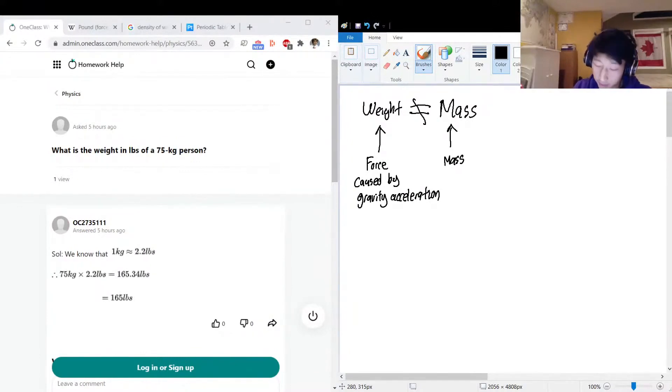Okay, so if we have a mass of 75 kilograms, so our m value is 75 kilograms, and we're here on Earth, so our acceleration is 9.8 meters per second squared.